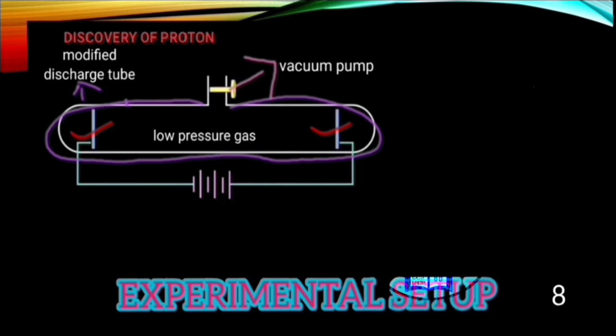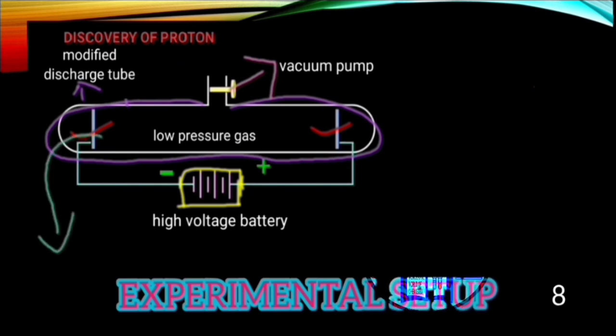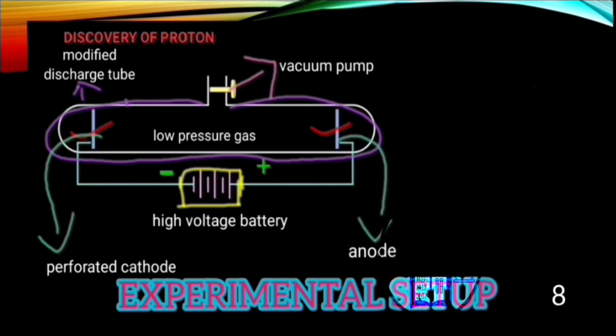At both sides, two metallic strips of electrodes were present, which were connected with a high voltage battery. This is the negative side and this is the positive side of the source of battery. The electrode connected to the negative side of the battery is cathode, and electrode connected to the positive side source of the battery is anode.